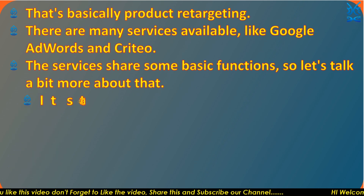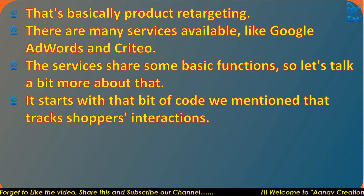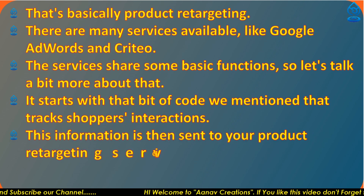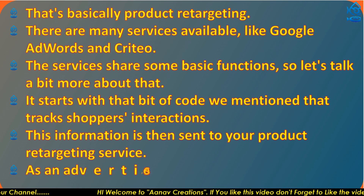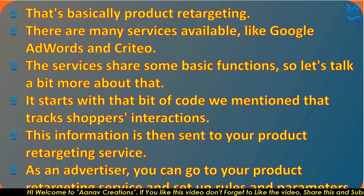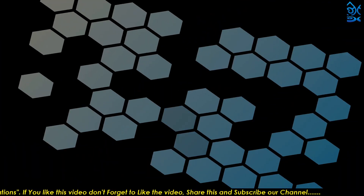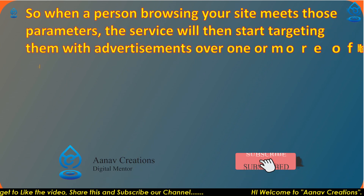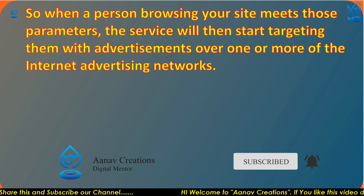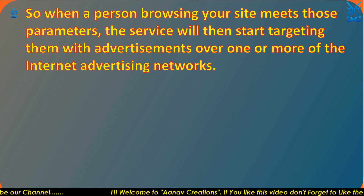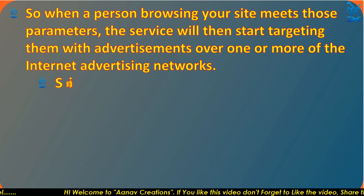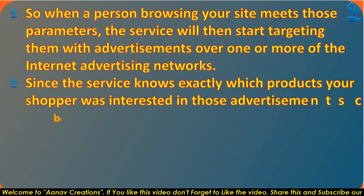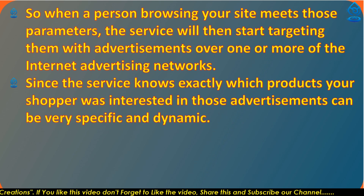It starts with that bit of code we mentioned, which tracks shoppers' interactions. This information is then sent to your website and retargeting service. As an advertiser, you can go to your product retargeting service and set up rules and parameters. So when a person browsing your site meets those parameters, the service will start retargeting them with advertisements over one or more of the internet advertising networks.